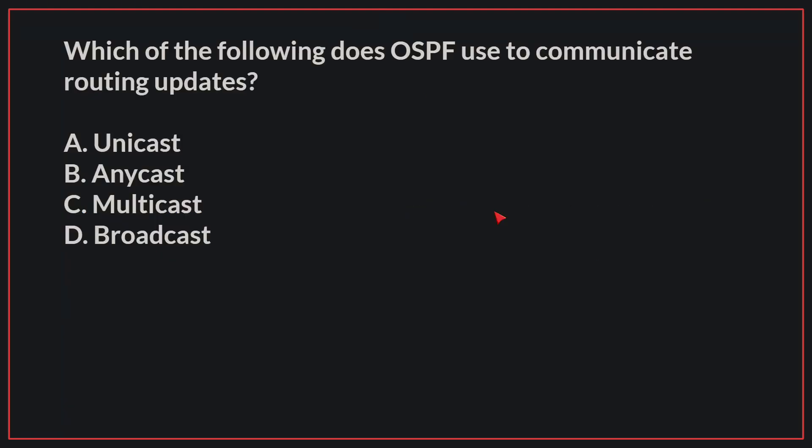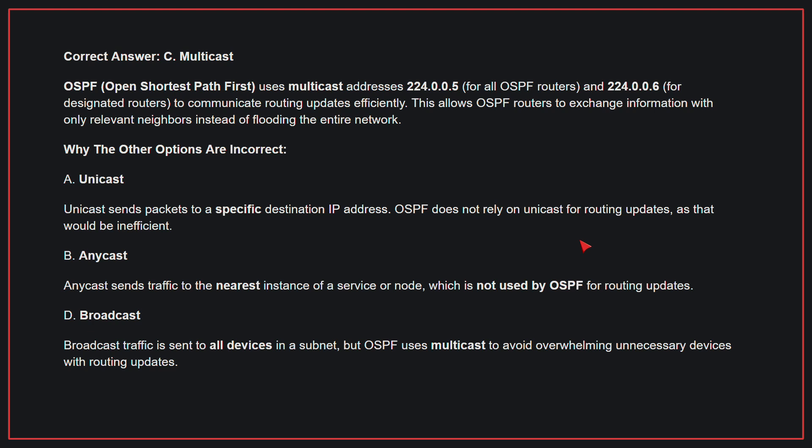Which of the following does OSPF use to communicate routing updates? The correct answer is C: Multicast. OSPF uses multicast addresses 224.0.0.5 for all OSPF routers and 224.0.0.6 for designated routers to communicate routing updates efficiently. This allows OSPF routers to exchange information with only relevant neighbors instead of flooding the entire network.